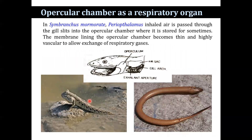The opercular chamber: in Symbrancus mormorata and Periophthalmus, the inhaled air is passed through the gill slits into the opercular chamber, where it is stored for some time. The membrane lining of the opercular chamber becomes thin and highly vascular to allow exchange of respiratory gases.